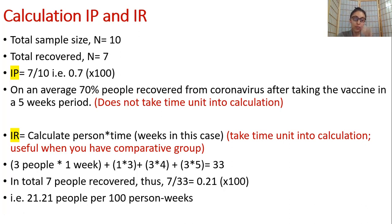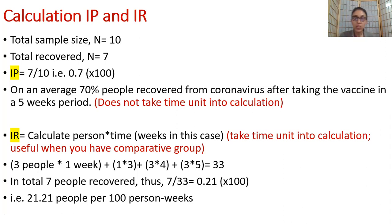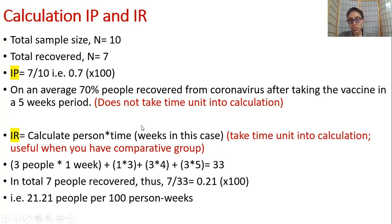The incidence rate is particularly useful when you have a comparative group — for example, comparing the recovery rate between two companies' COVID vaccines. You can compare the risk of not getting COVID between the two. Regarding reporting: it could be 1,000 person-years or person-months or person-weeks, depending upon the number of people in your study. I hope the calculation is simple enough to understand. The main difference with incidence rate is that it takes the time unit into calculation.